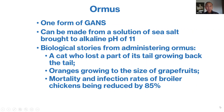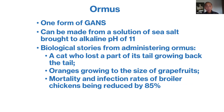Ormus is relatively simple material to make. Keshe describes more elaborate ways to make GANs, and I suggest reading the Spaceship Institute lectures — there are 12 of them that give a great description of what he does. Ormus is a simple form of GANs — a mixture of different types of metals. All one does is take a solution of sea salt, bring it to an alkaline pH of about 11, and the fluffy ormus forms. Researchers have found that if a cat lost a tail, the tail grows back when you put ormus on it. Oranges can grow the size of grapefruits, and mortality and infection rates of broiler chickens are reduced significantly when exposed to ormus. There are a lot of healing properties with regard to these energies.